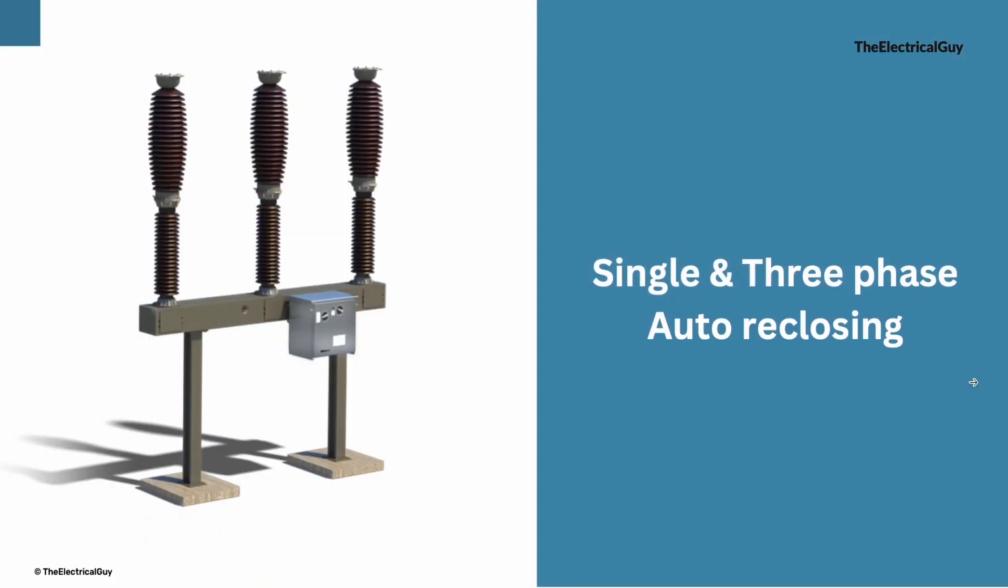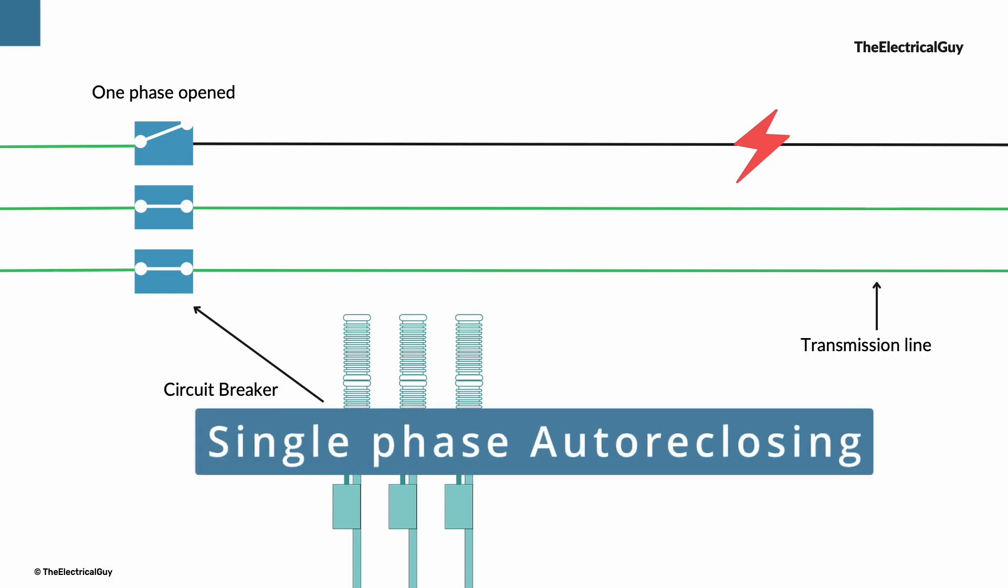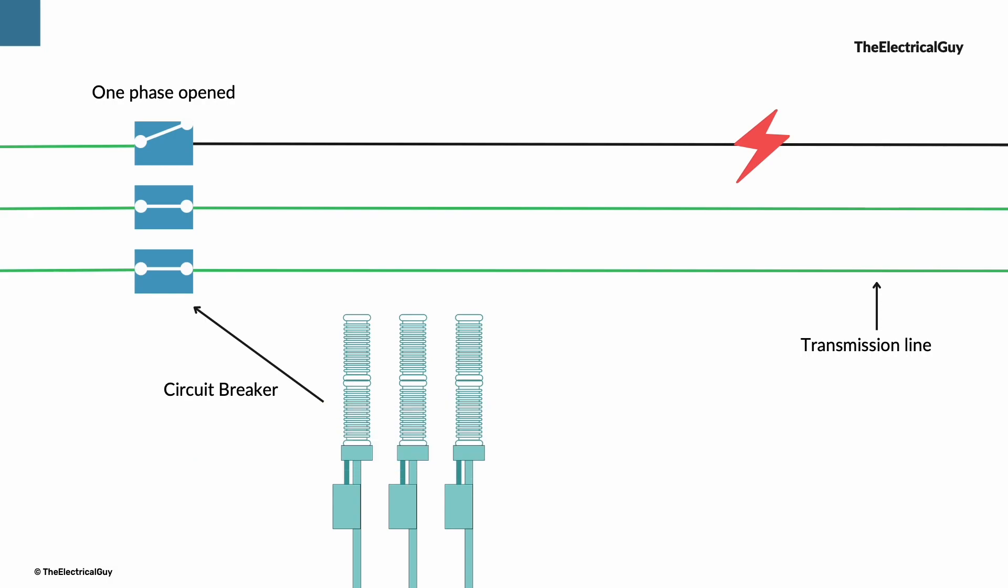Let's say there is a fault only on one phase. Now in such case, only a single phase is tripped and the balanced two phases are still in operation. And circuit breaker will try to reclose that one faulty phase only. And this type of reclosing is called as single phase auto reclosing because we are only trying to reclose one phase.